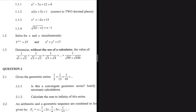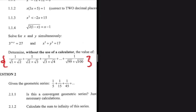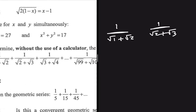Let's look at 1.3: determine without the use of a calculator the value of this series. A series is a summation of the terms of a sequence. The first term is 1 divided by (√1 + √2), the second term is 1 divided by (√2 + √3), and the third term is 1 divided by (√3 + √4). I can see the trend: the general term is Tn = 1 / (√n + √(n+1)). All I need to do now is calculate the sum.